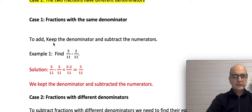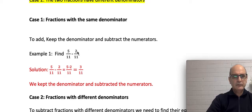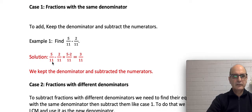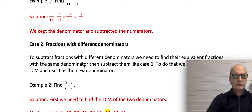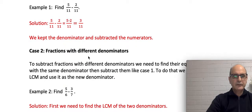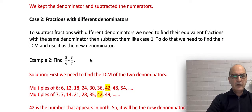In case one, to subtract two fractions all we need to do is keep the denominator and subtract the numerators. For example, to subtract 2/11 from 5/11, we keep 11 because the denominators are the same, and then subtract the numerators: 5 minus 2 equals 3. So our answer is 3/11. We simply kept the denominator and subtracted the numerators.